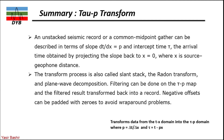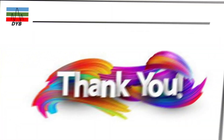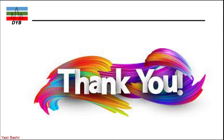In summary, the key message is that the tau-p transform, or Radon transform, is a method applied in the tau-p domain. It is an effective and easier way of removing noise in shot gather data or any domain. We can apply this transform — linear, hyperbolic, or parabolic — to remove unwanted events. Thank you and have a good day.